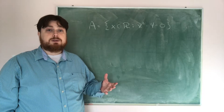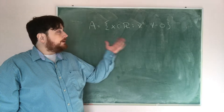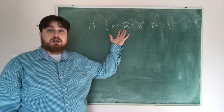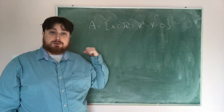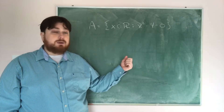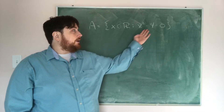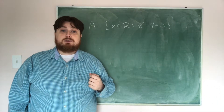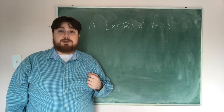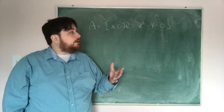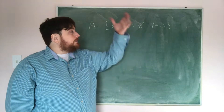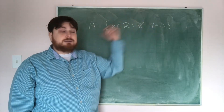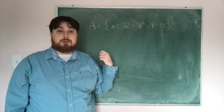We need to determine what this is saying. We need x to be a real number, and we need it to satisfy x squared minus 4 equals 0. So if we want to find the elements of the set, we just need to find the real numbers that satisfy this property.